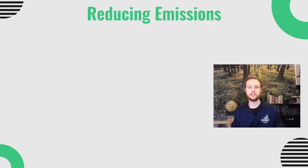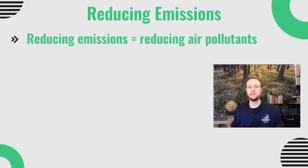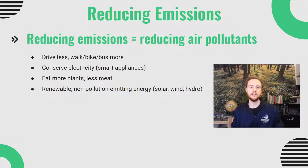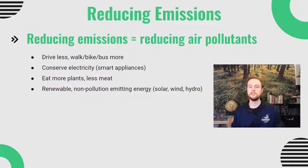The first air pollution reduction method we'll talk about is just reducing emissions — common sense steps that reduce the total amount of pollution we're putting into the atmosphere. Things like riding our bikes instead of driving our cars, or walking or taking public transit more, and conserving electricity — being mindful about turning off lights or using smart appliances. Remember, most electricity in developed nations comes from coal-fired power plants or other fossil fuels, which when combusted release NOx, SOx, VOCs, and other air pollutants.